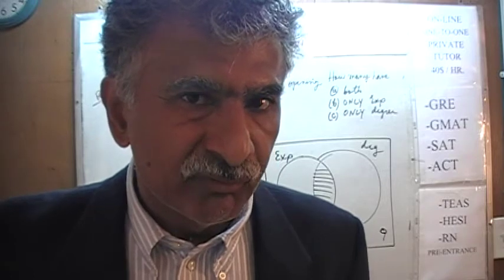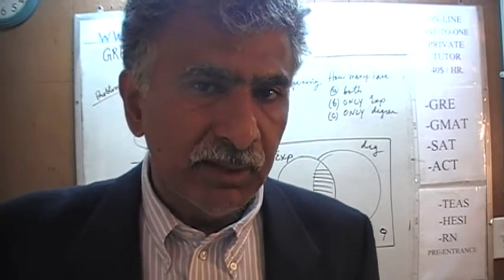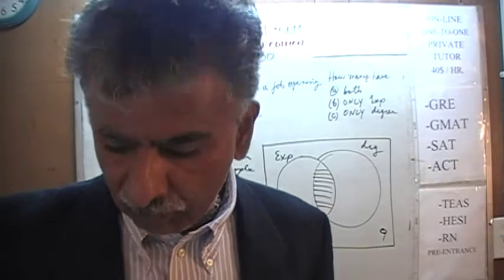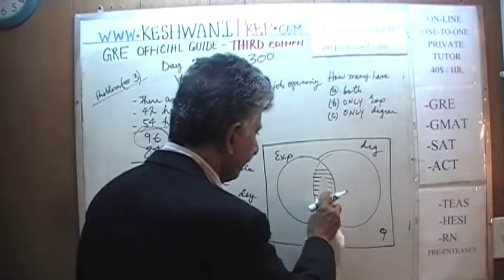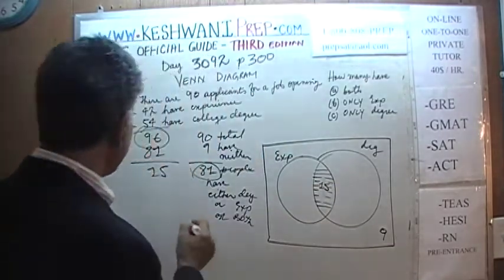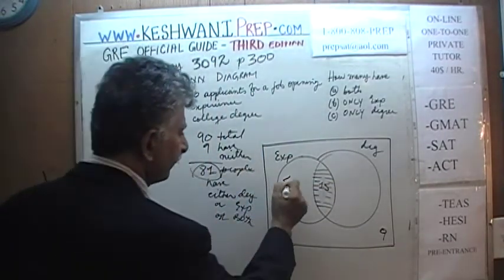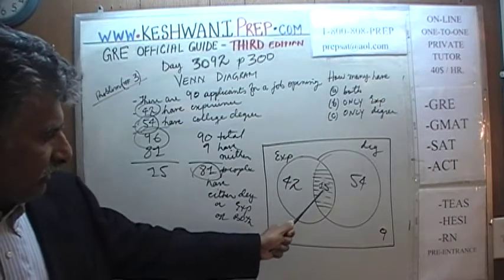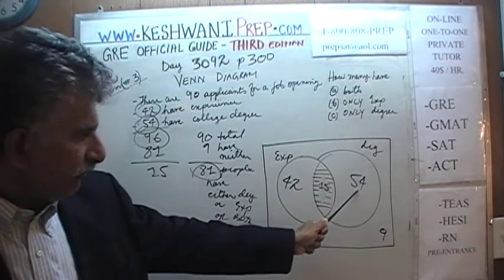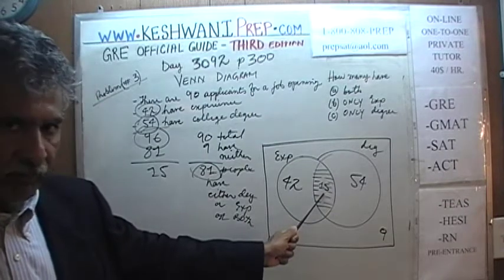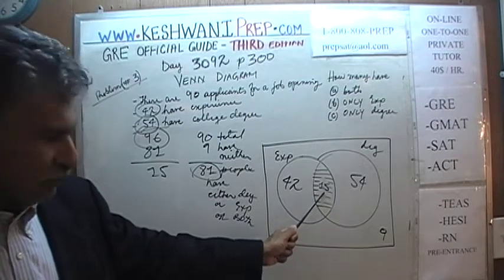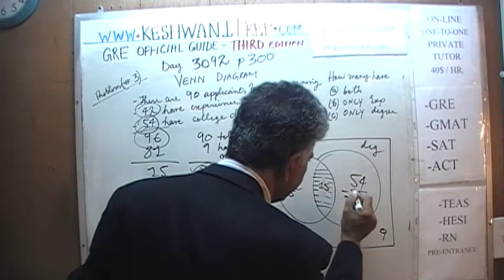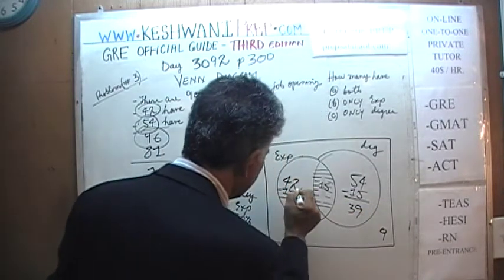We are counting these 15 people first as people who have college degrees, and then counting the same 15 people again as people who have job experience, because they possess both characteristics. So as soon as we put 15 in the intersection, we take away 15 from experience (42 - 15 = 27) and from degrees (54 - 15 = 39).